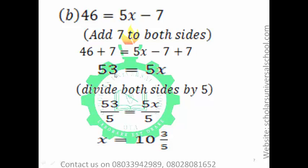The operation you perform on the right-hand side must also be the operation you perform on the left-hand side. Minus 7 plus 7 gives zero, leaving 5x. 46 plus 7 is 53. The next thing is to make x stand alone — divide both sides by 5. 53 divided by 5 equals 5x over 5. The 5s cancel, leaving x. How many 5s in 53? That is 10 and 3 over 5.